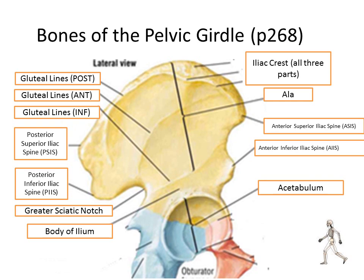Coming around to the front of the bone, we have two smaller projections: the anterior superior iliac spine (ASIS) and the anterior inferior iliac spine (AIIS). The area superior to that on the anterior aspect is called the ala, which we also learned when studying the sacrum. We also have the iliac crest, which wraps around the entire top of the hip bone.